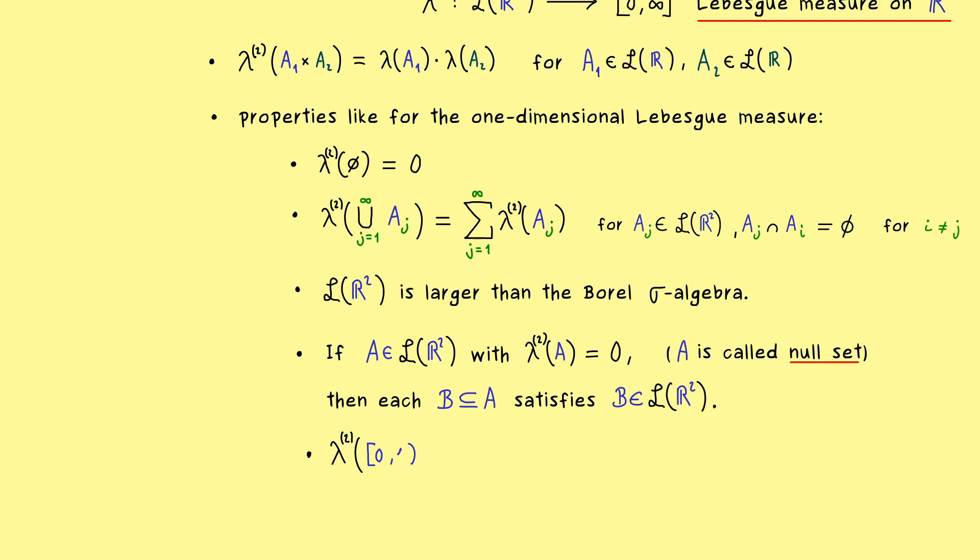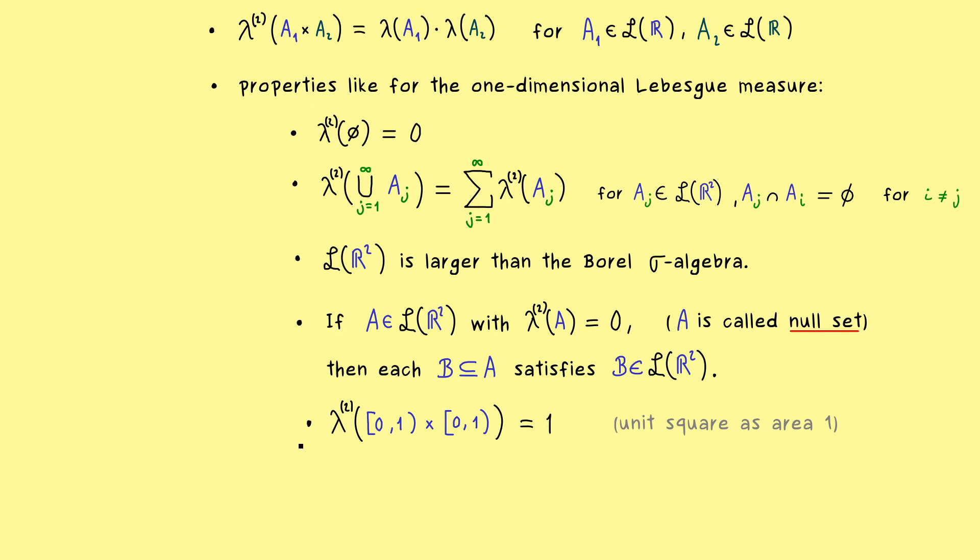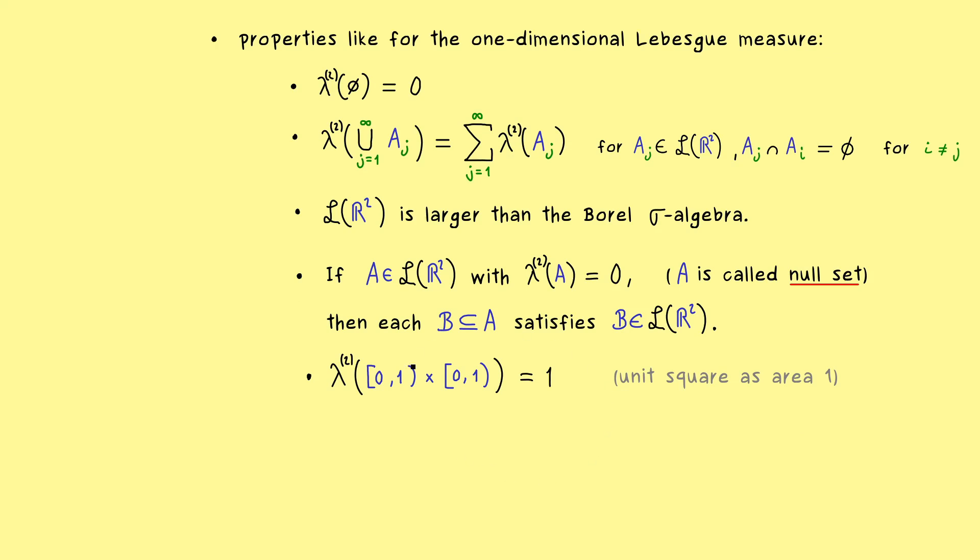Okay, and now the next property cares about the normalization of the measure. So in other words, what is the area here for the unit square? Indeed, there we can use our product formula from above and we get out one. In other words, the unit square has area one, when we measure it with our two-dimensional Lebesgue measure.